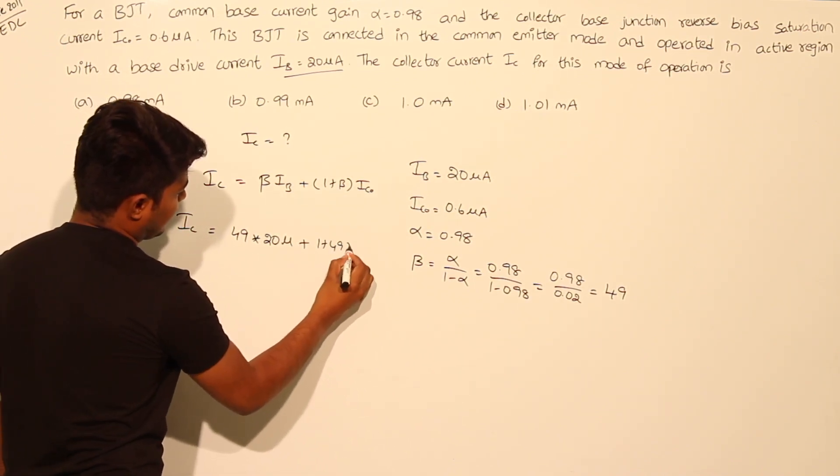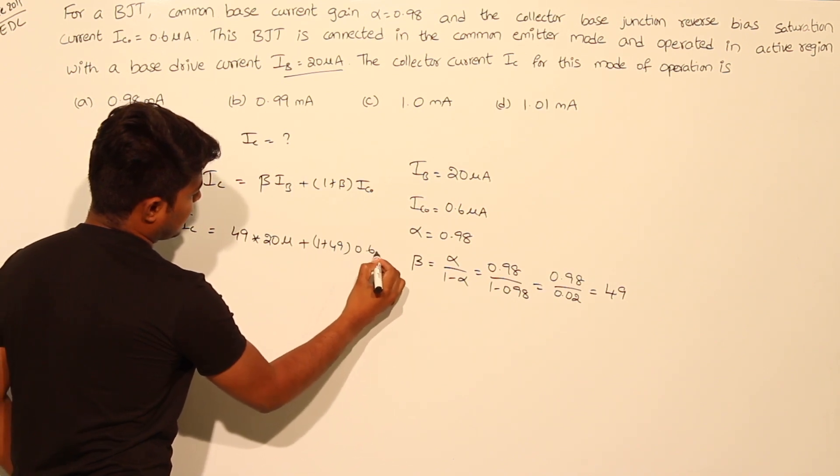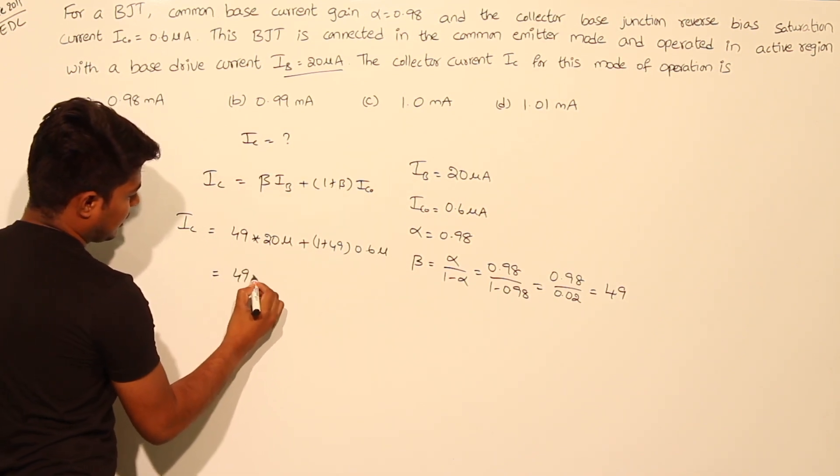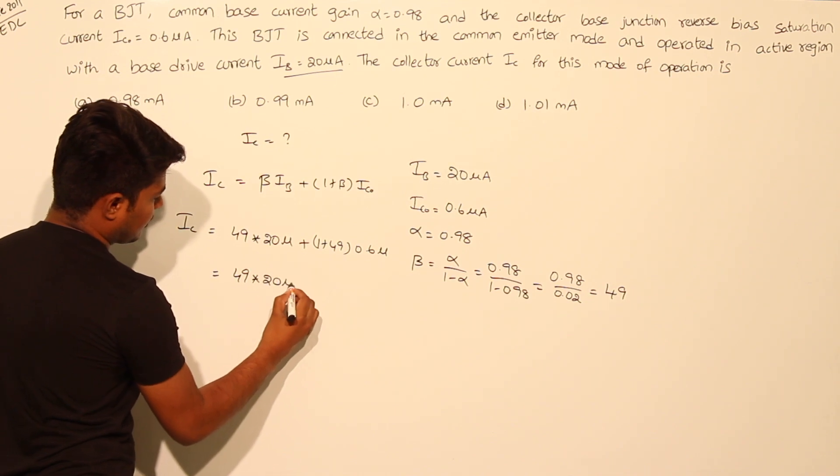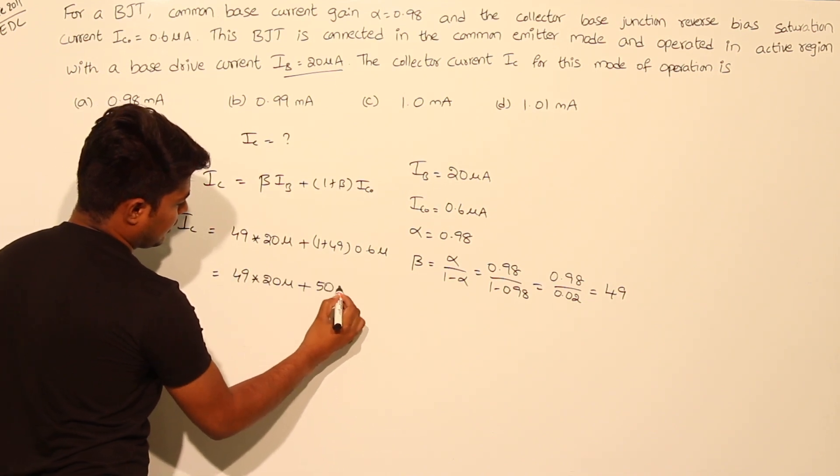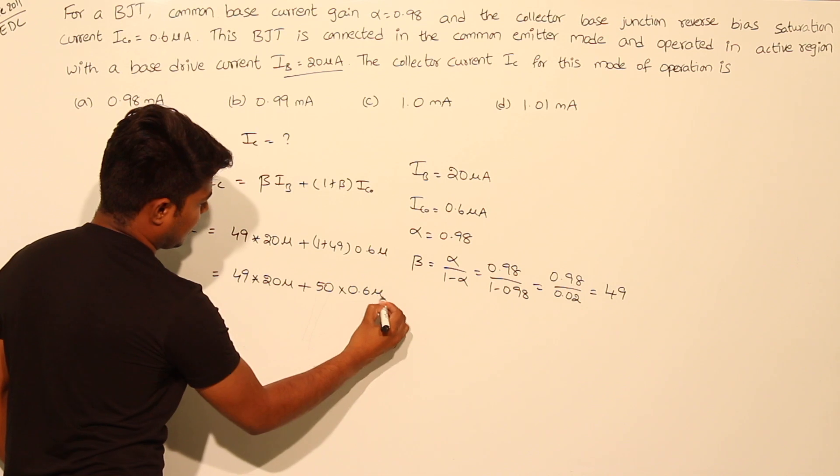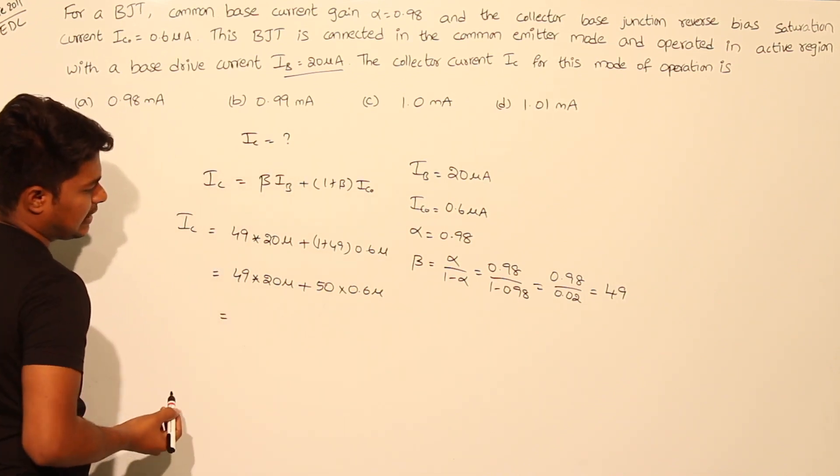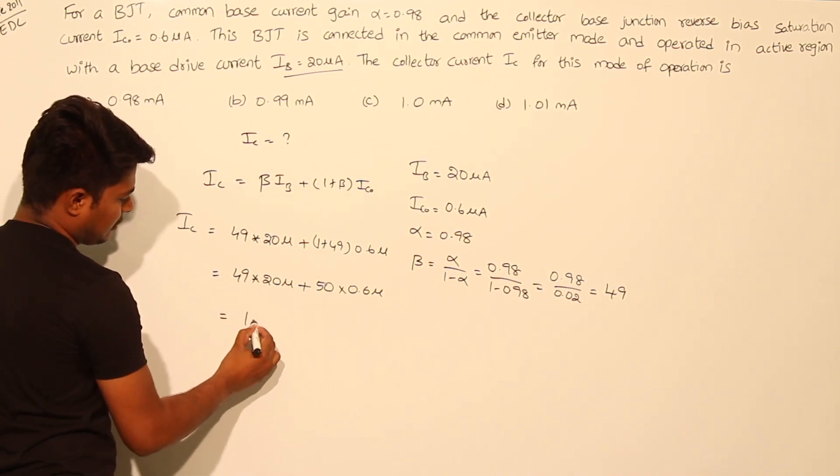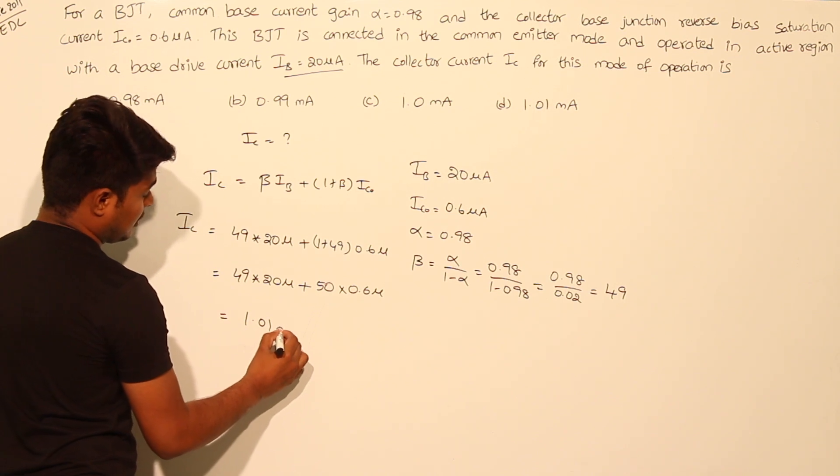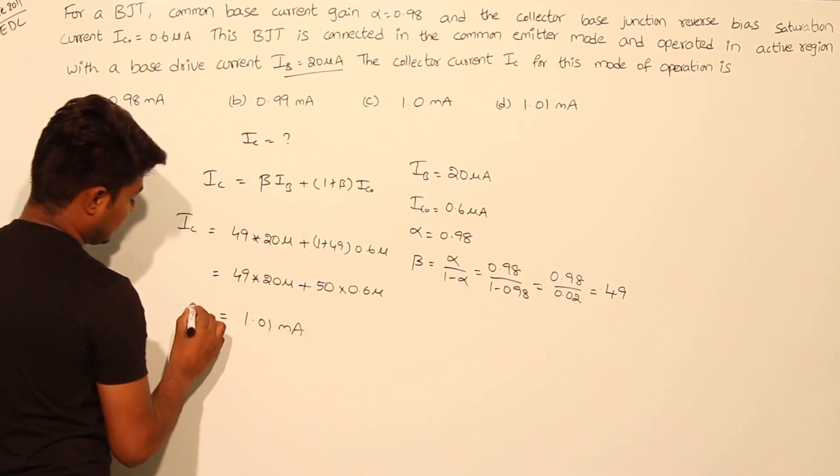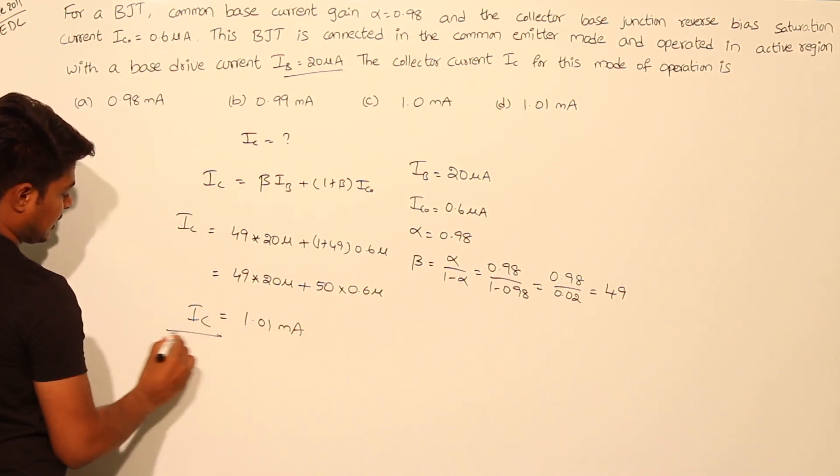This will be equal to 49 into 20 micro plus 50 into 0.6 microamps. And if you calculate this, this will be approximately equal to 1.01 milliamperes. The collector current in CE region will be 1.01 milliamperes.